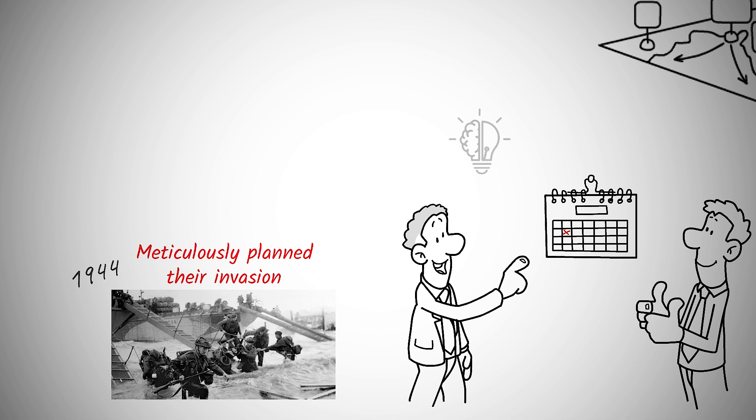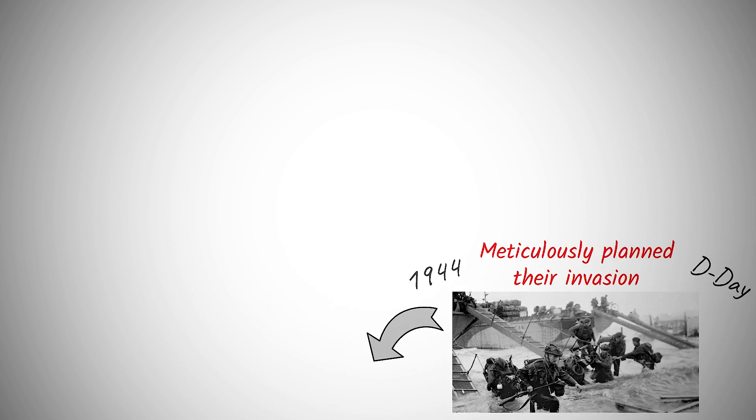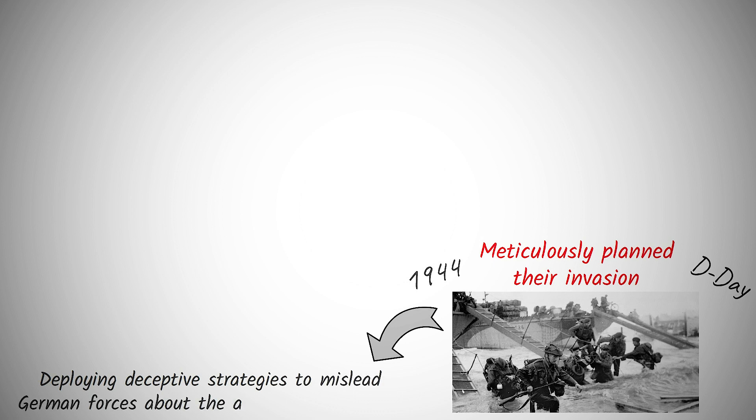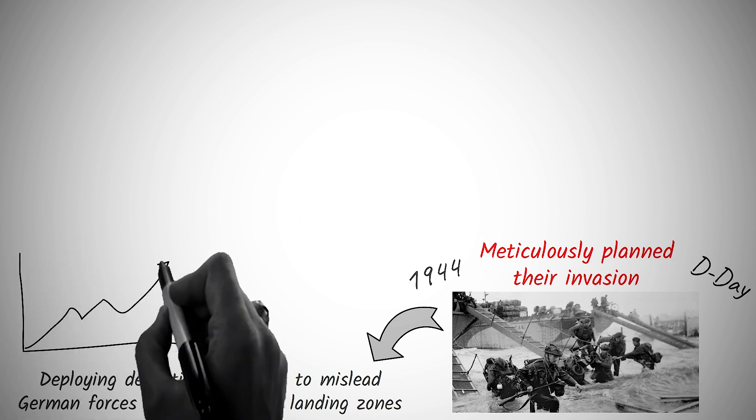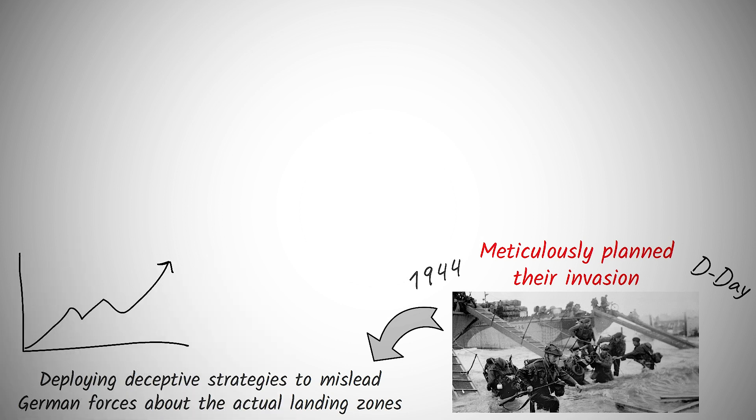The months leading up to D-Day saw an exhaustive series of reconnaissance missions, dummy operations, and comprehensive training sessions. The Allies even went as far as deploying deceptive strategies to mislead German forces about the actual landing zones. This intense preparation was a significant factor in the Allies' success, allowing them to secure a foothold in Europe and ultimately push towards Germany.